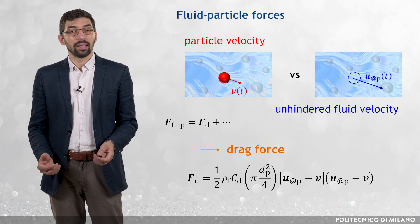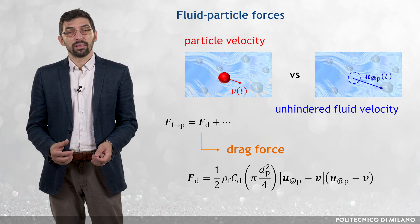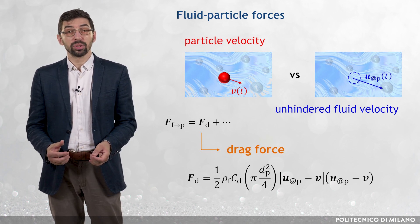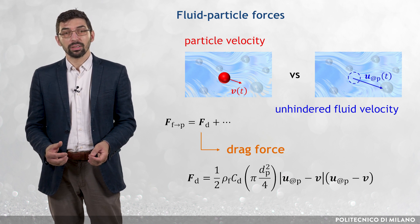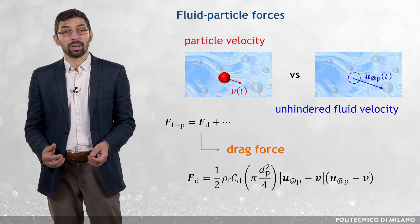This is the so-called undisturbed fluid velocity, that is, the fluid velocity that can be hypothetically extrapolated to the particle centroid while ignoring disturbances caused by the particle itself.